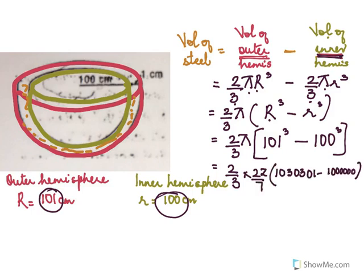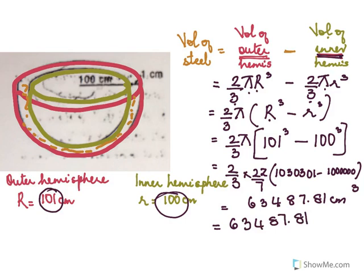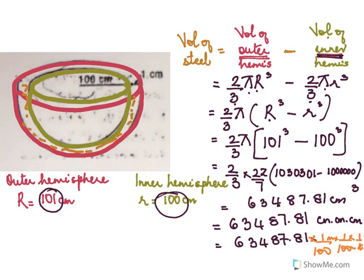The calculation is long — after computing 101³ and 100³ — you get the answer 63487.81 cubic centimeters. This is your answer. If you want to convert into cubic meters, remember: since 1 meter = 100 centimeters, you divide by 100 three times (once for each dimension), i.e., multiply by (1/100)³.